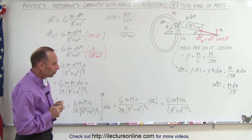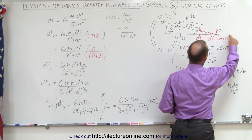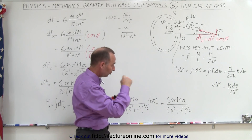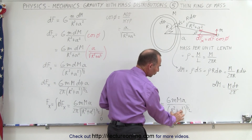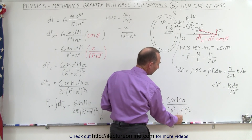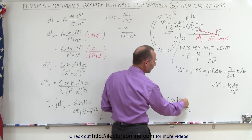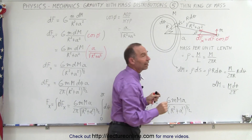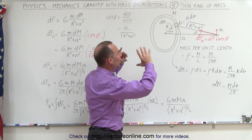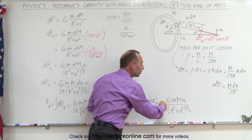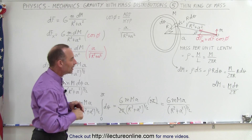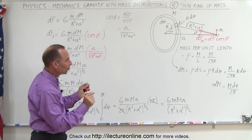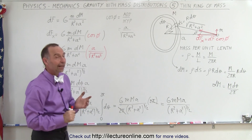Let's examine that result. When a becomes much larger than the radius r of the ring, then r² + a² converges to a², and a² to the three-halves power is a³. With an a in the numerator, a divided by a³ simply becomes 1/a², which is the inverse square of the distance between the ring and the small mass. So when the small mass is far enough away, the whole ring appears as a point mass, and we recover the universal equation of gravity: G·m·M divided by a².